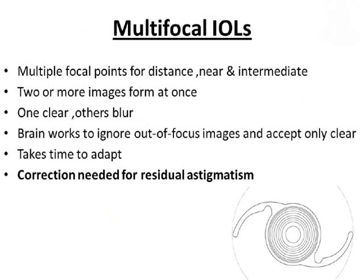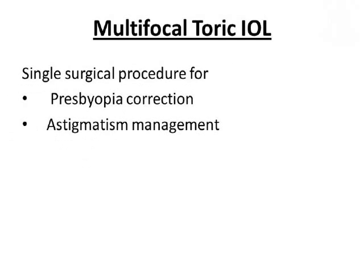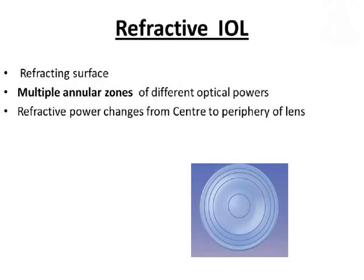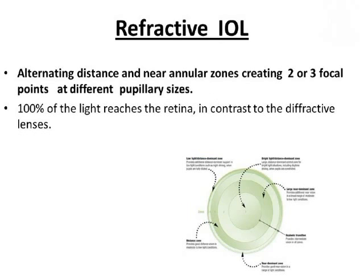We started with monofocal IOLs, then came multifocal, and now multifocal toric IOLs, which provide correction for presbyopia as well as astigmatism. There are two basic designs for multifocal IOLs, onto which the toric component is added: the refractive type and the diffractive type. Refractive IOLs have a refracting surface with annular zones — multiple annular zones of different optical powers ranging from center to periphery, or alternating distance and near annular zones creating two to three focal points at different pupillary sizes. In this case, 100% of light reaches the retina, compared to diffractive IOLs in which the amount of light reaching the retina is less.